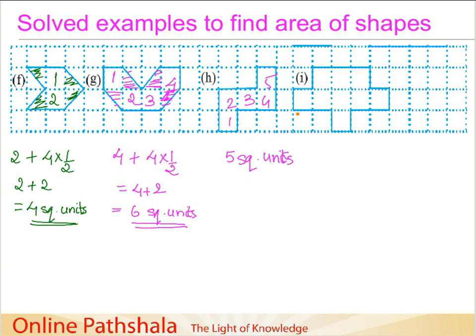For the next figure which is figure I, I am just counting horizontally 1, 2, 3, 4, 5, 6, 7, 8 and 9. So this is 9 square units.